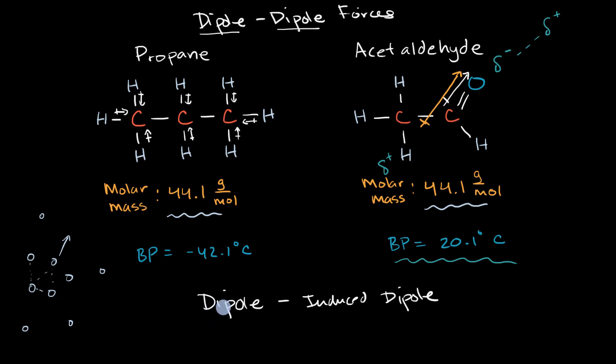You could have a temporary dipole inducing a dipole in the neighbor, and then they get attracted to each other, and you could have a bit of a domino effect. You could have a permanent dipole interacting with another permanent dipole. They get attracted to each other, and you could have a permanent dipole inducing a dipole in a neighboring molecule.